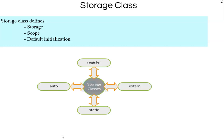There are four major types of storage classes. One is auto, which is the default storage type. Second is register. Third is external. Fourth is static. There is another one called global, even though it is not a keyword. A variable is declared as global if it is defined anywhere outside of the main program. We will discuss that as well.